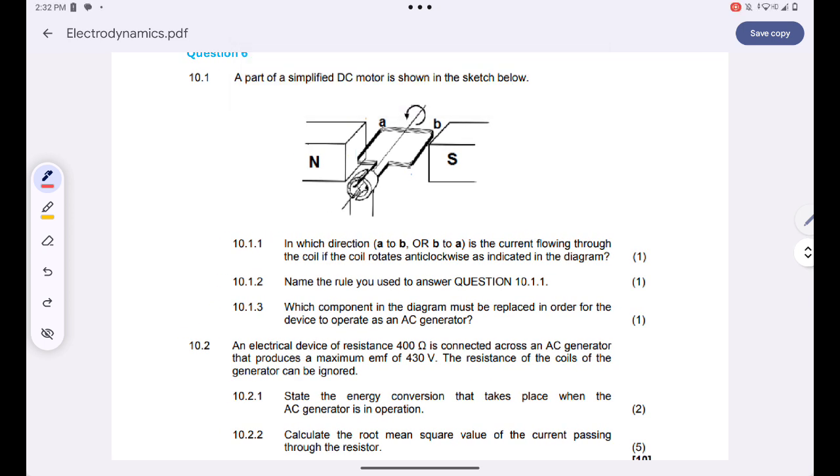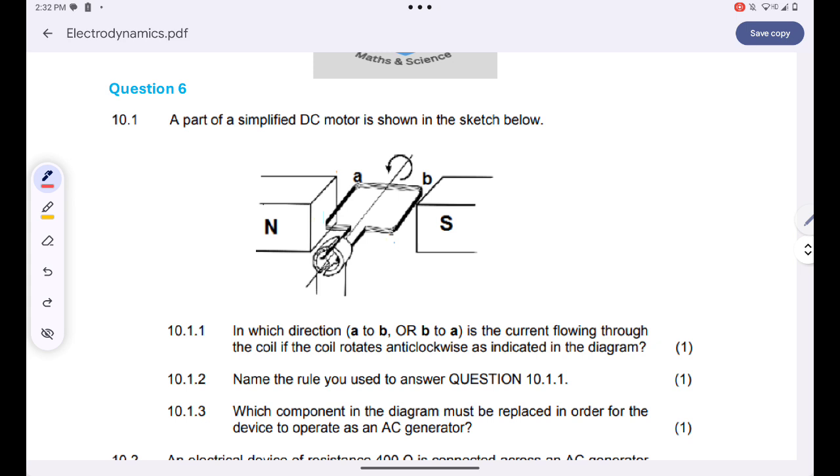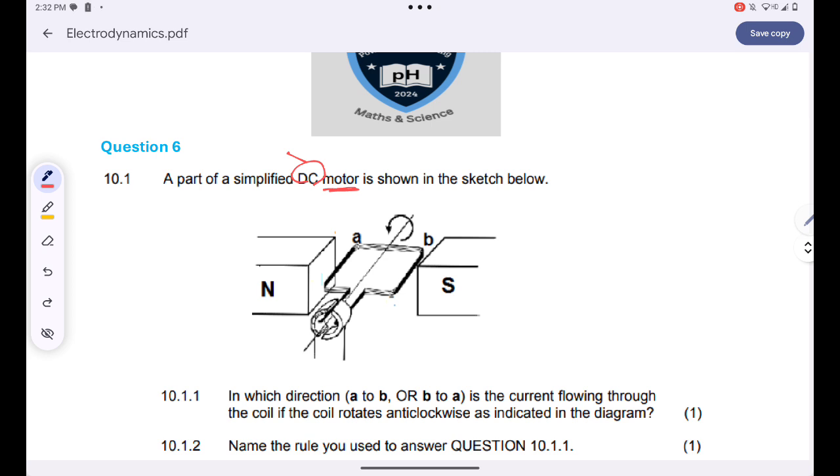Okay, we are told that a part of a simplified DC motor is shown in the sketch below. It's part of a DC motor altogether. Firstly, we have direct current because we have DC. So if we have direct current, the type of commutators that we use are called split ring commutators. We are using split rings since we are dealing with direct current, and the type of device we are dealing with is a motor.